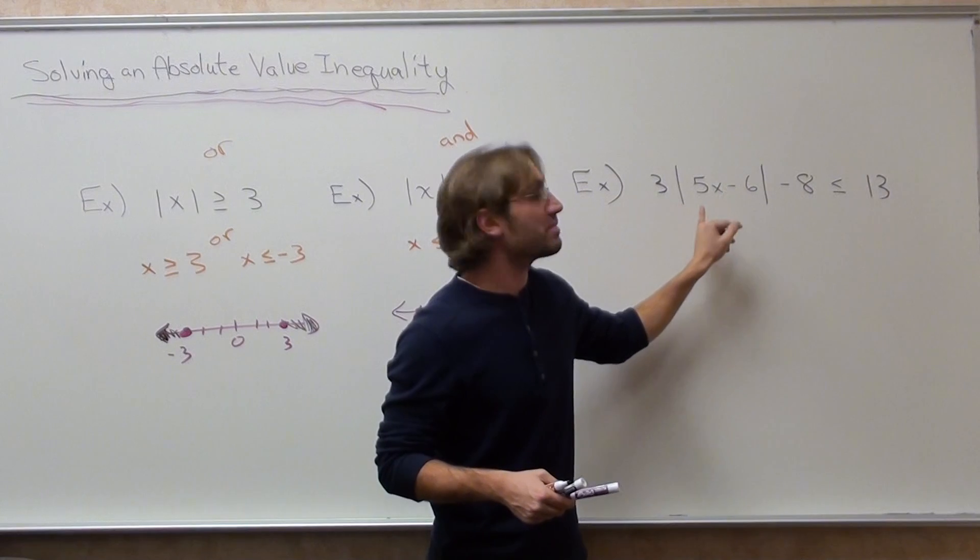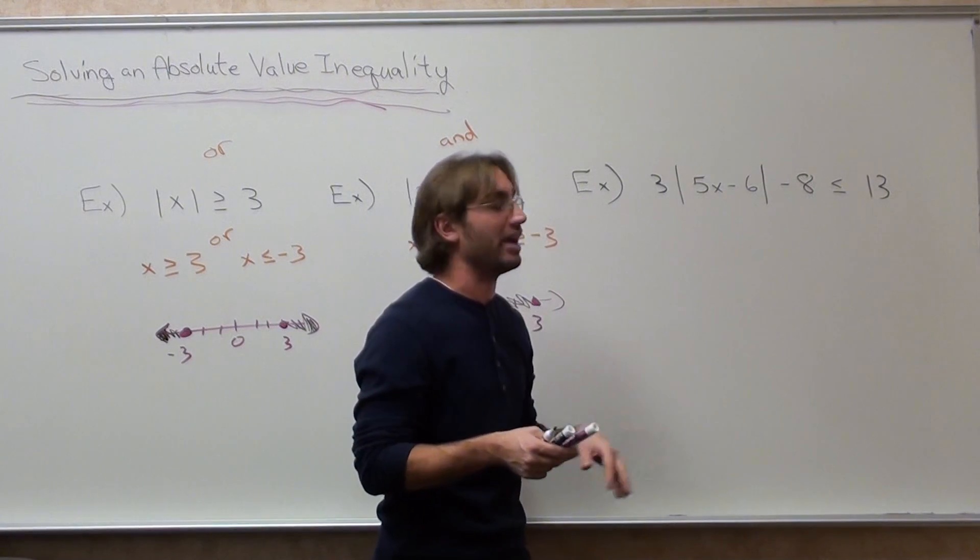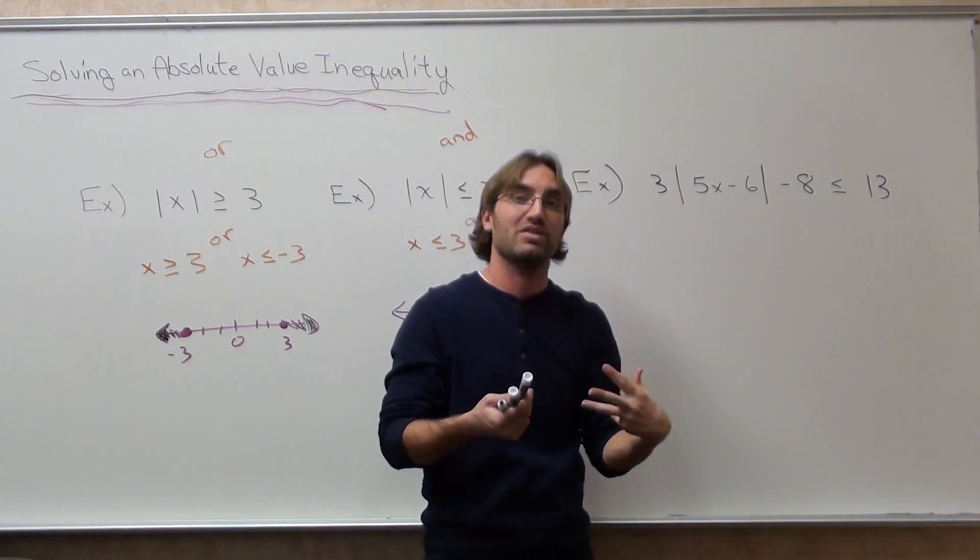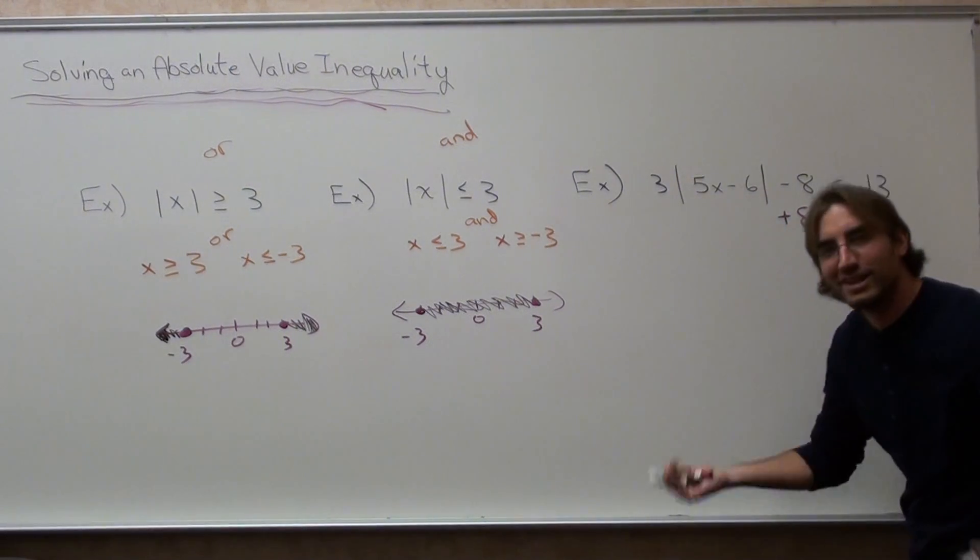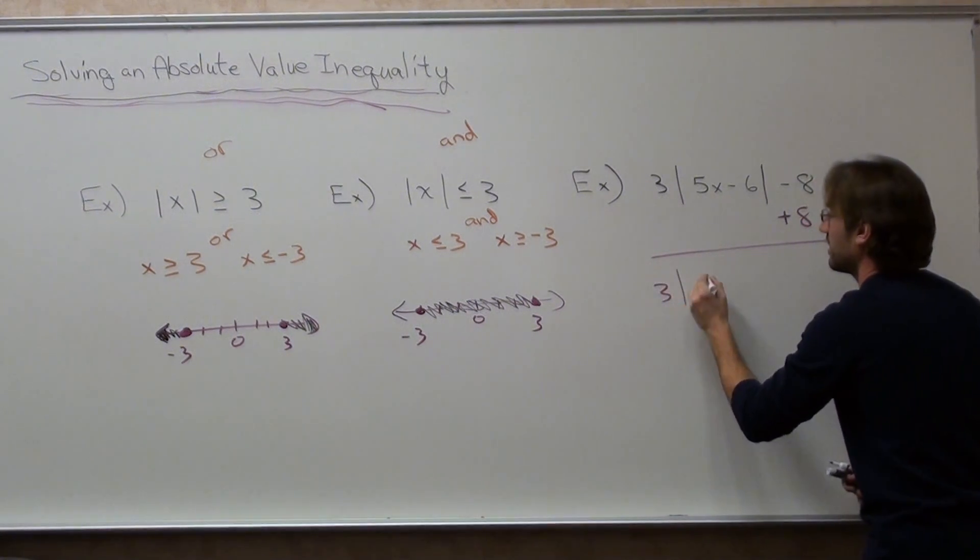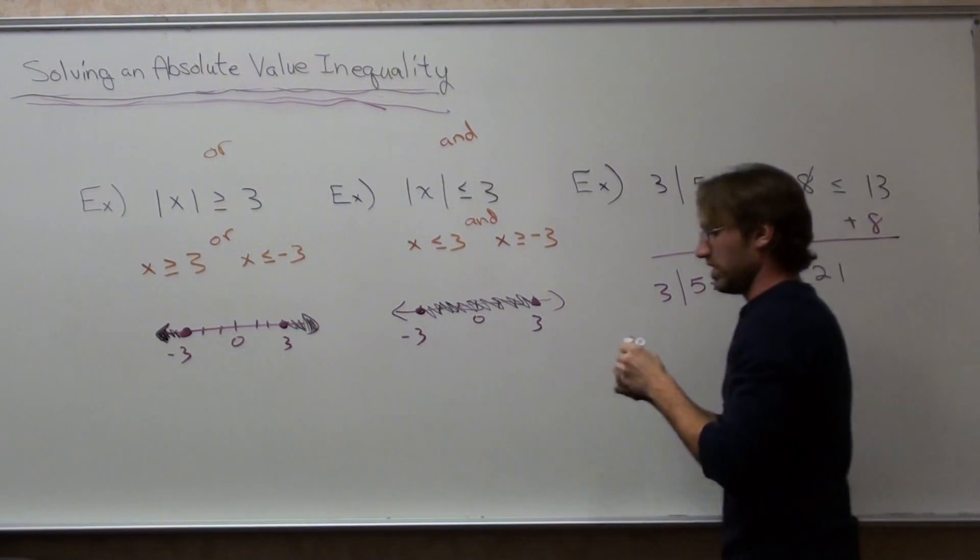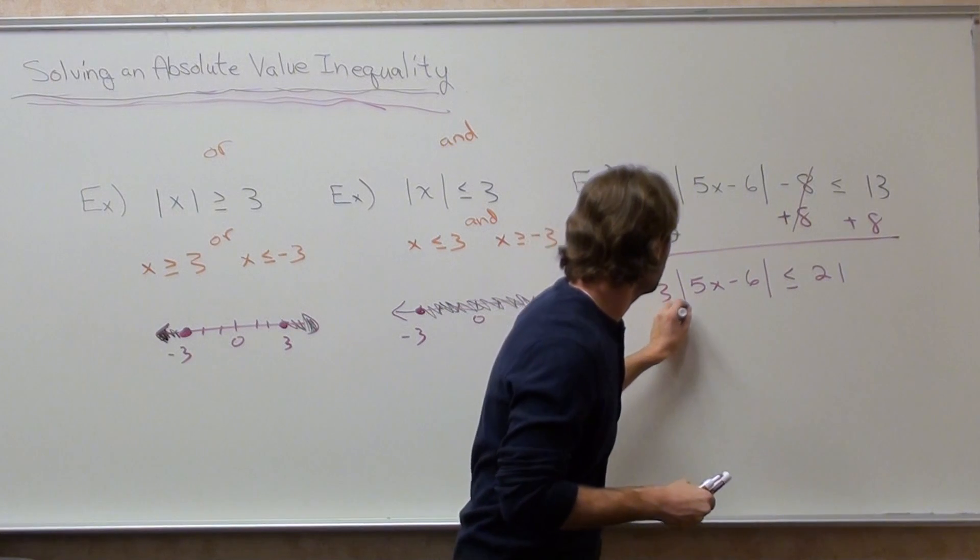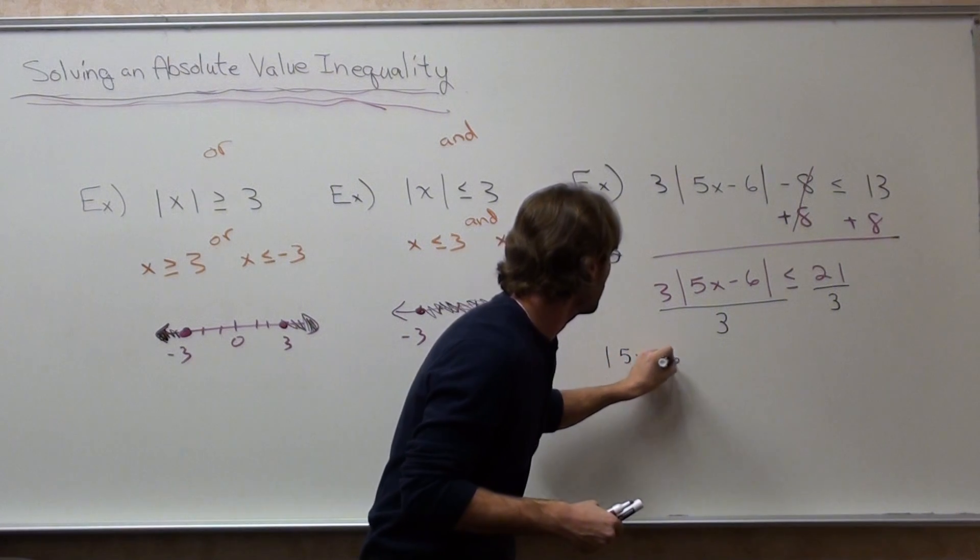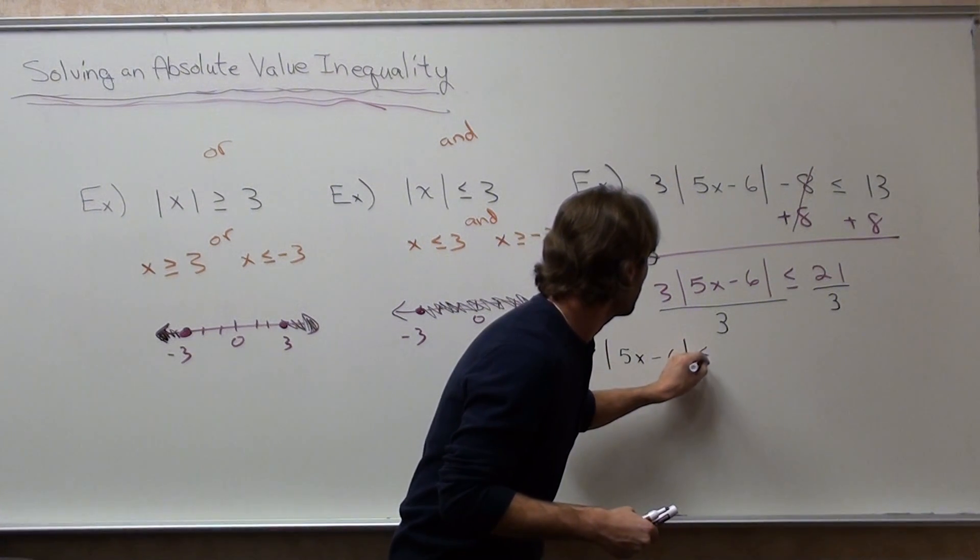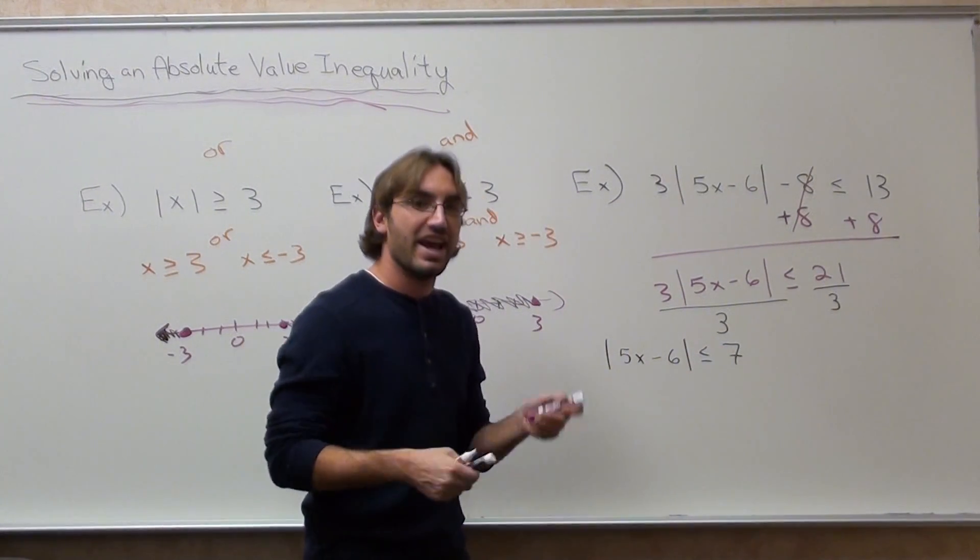3 times the absolute value of 5x minus 6 subtract 8 is less than or equal to 13. We're not going to determine if it's an AND or an OR problem just yet. We have to get rid of the negative 8 and the 3 before we can even make that determination. So we're going to add 8 to both sides. Now we're going to divide by 3. The absolute value of 5x minus 6 is less than or equal to 7. That is an AND problem.